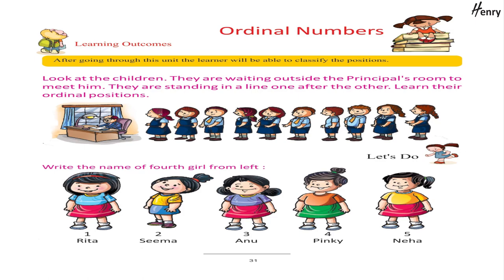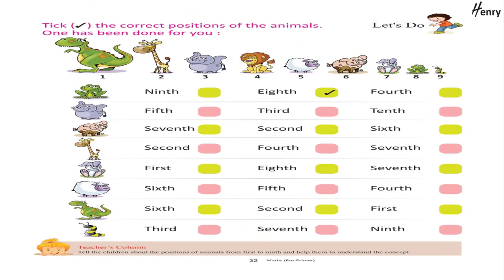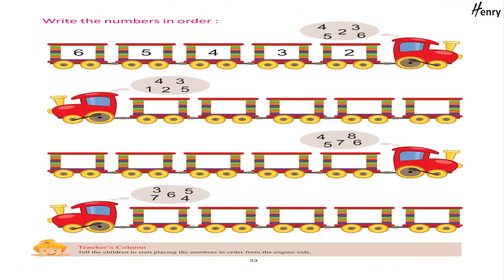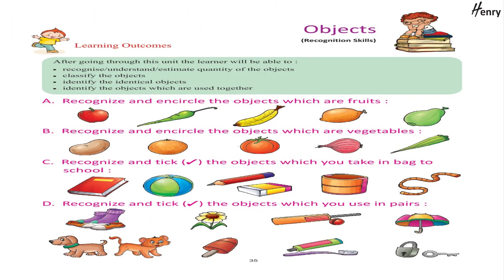Learn their ordinal position. Let's do — write the name of the fourth girl from the left. Let's do — take the correct position of the animals; one has been done for you. Write the numbers in order. Read aloud and write the numbers of objects.